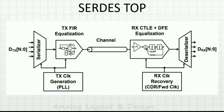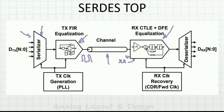The entire SERDES top level looks like this: digital data comes in, we need a serializer (a kind of MUX), then an equalizer to increase signal strength before transmitting (FIR), then the channel. Once the signal arrives at the receiver it will be weak, so I boost it using CTLE (continuous time linear equalizer) and DFE (decision feedback equalizer) to bring the signal back to the same strength. Then a deserializer recovers the original parallel data.